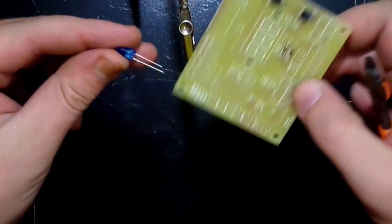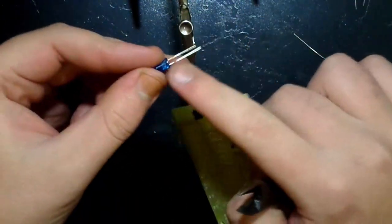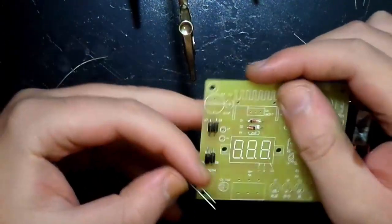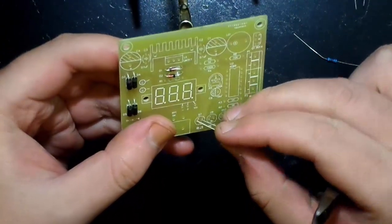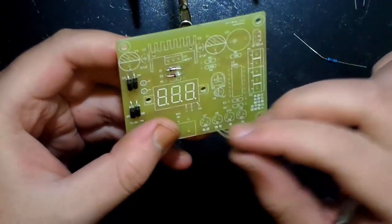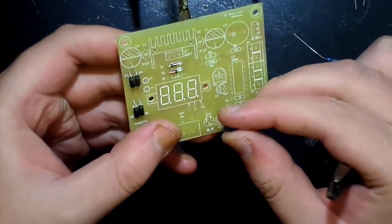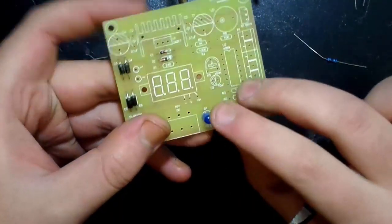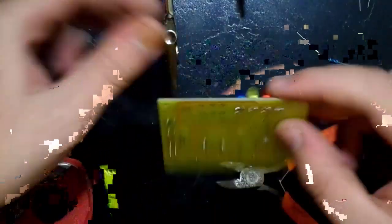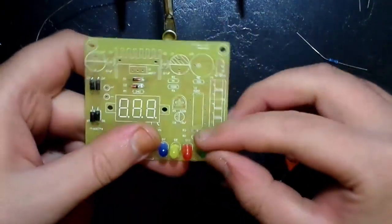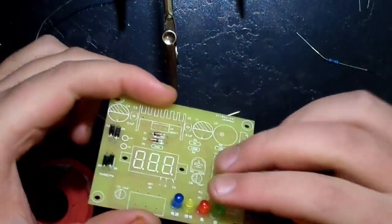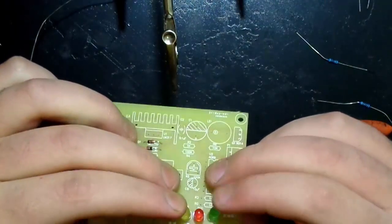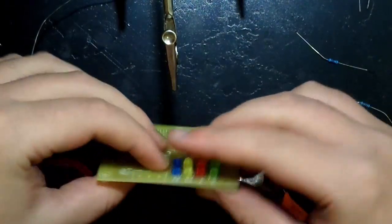Next up is the LEDs. The long pin is the positive and the short pin is the negative. And that must correspond when putting it into the board. The board does have markings to say which color is supposed to go into which slot. Do a quick solder, snip off the pins and if your LEDs are on crooked, that's fine. You just heat up the pins, push the LEDs tight onto the board.